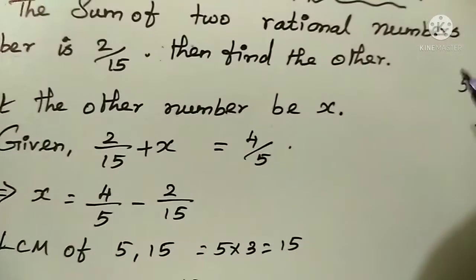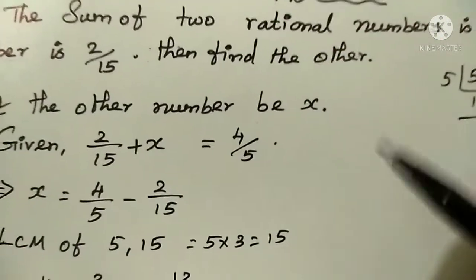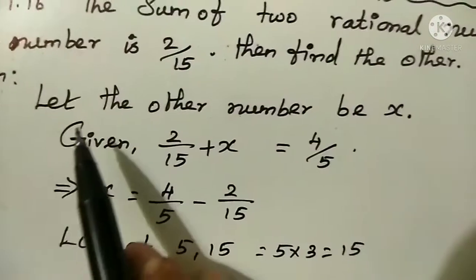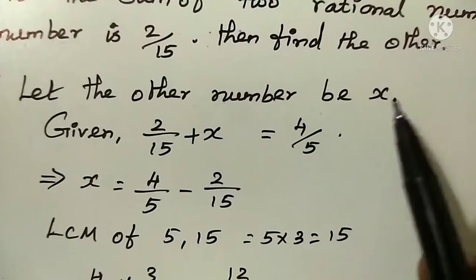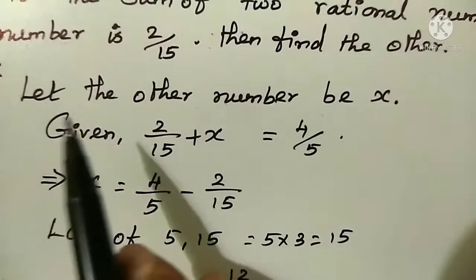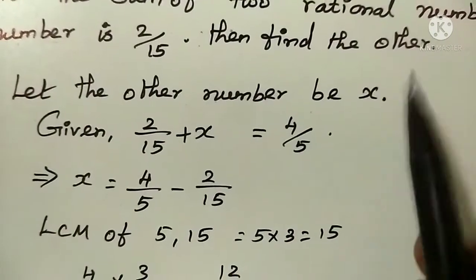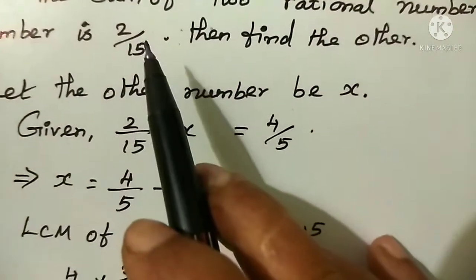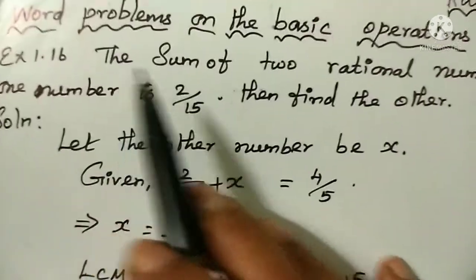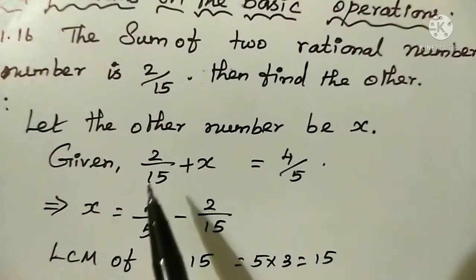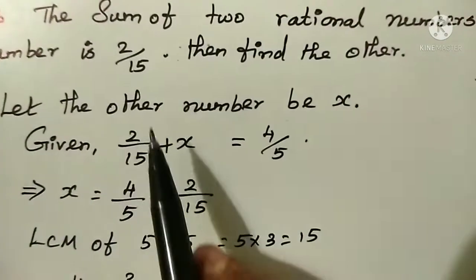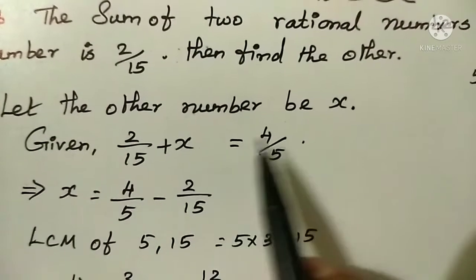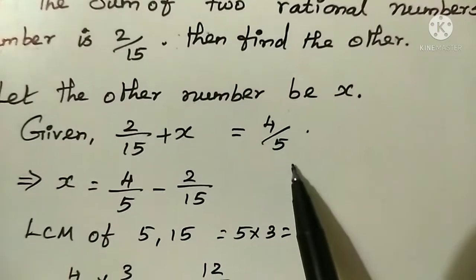Now, let the other number be x. Given, the sum of two rational numbers: 2 by 15 plus x is equal to 4 by 5.